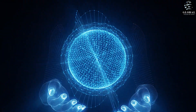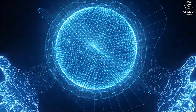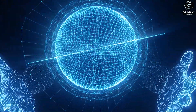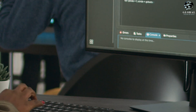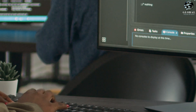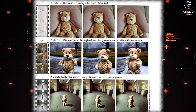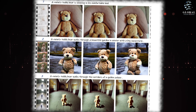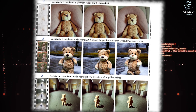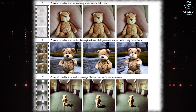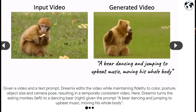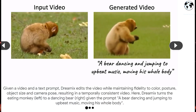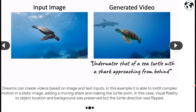First, there's the Motion Structure Retrieval Module. It finds the perfect video clips by using text queries that describe the scenes or motions we want — the system locates the ideal video candidates for our story. Then we have the Structure Guided Text-to-Video Synthesis Module. This generates brand new videos that align perfectly with the motion structure and text instructions provided.